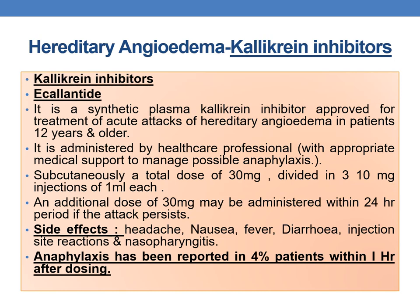Callicrin inhibitors are inhibitors of kinin production. An example is ecallantide, a synthetic plasma callicrin inhibitor approved for treatment of acute attacks of hereditary angioedema in patients 12 years or older. It is administered by a healthcare professional with appropriate medical support to manage possible anaphylaxis. Subcutaneously, a total dose of 30 mg divided in three 10 mg injections of 1 ml each is given; an additional dose of 30 mg may be administered within a 24-hour period if the attack persists. Side effects include headache, nausea, fever, diarrhea, injection site reactions and nasopharyngitis. Anaphylaxis has been reported in 4% of patients within 1 hour after dosing.